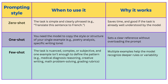Use zero-shot prompting if the task is simple and clearly phrased — for example, 'translate this sentence to French.' It saves time and works well when the task is already well understood by the LLM. One-shot prompting is best when you need the AI to copy the style or structure of a single example, such as poetry analysis or a specific writing tone. Few-shot prompting works great when the task is nuanced, complex, or subjective and one example isn't enough to define the pattern — such as medical diagnosis reasoning, creative writing, math problem-solving, or grading rubrics. Multiple examples help the model recognize deeper rules of variability.